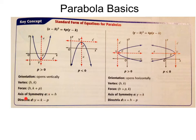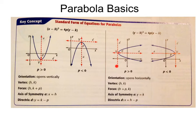Lastly, your directrix is a line that's opposite of your focus, and it's perpendicular to your axis of symmetry. What you're going to do is subtract p from your k value in the x squared term, or subtract p from your h value when you have your y term squared.